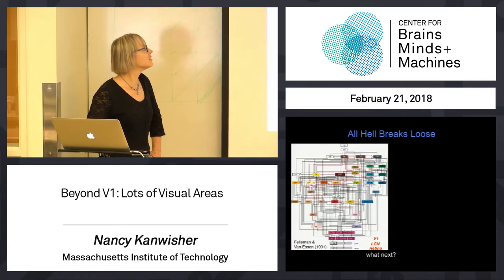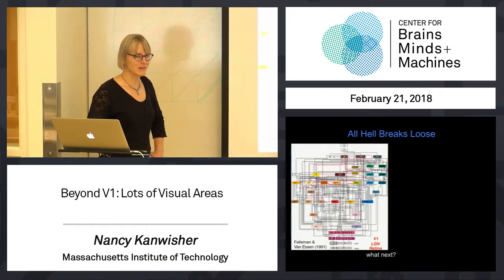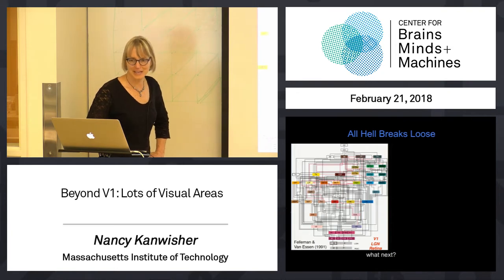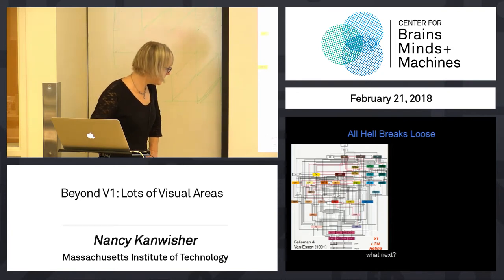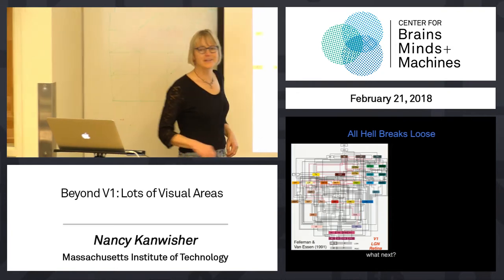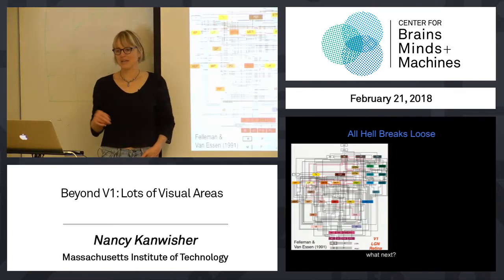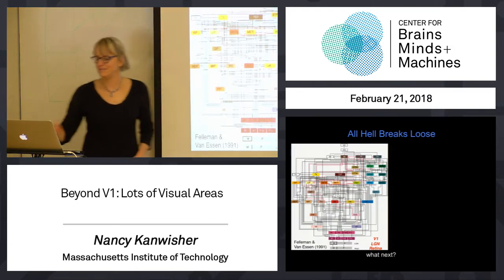What next is that all hell breaks loose. You've probably seen this diagram before — pretty horrifying. This is visual cortex. It is complicated as hell. This is a very old diagram from 1991, from studies of monkeys. It's gotten much more complicated since then.